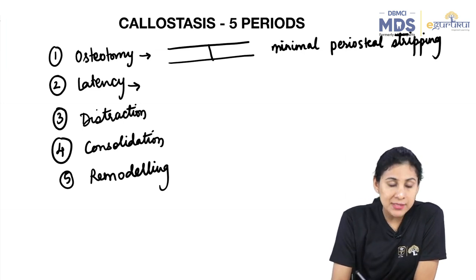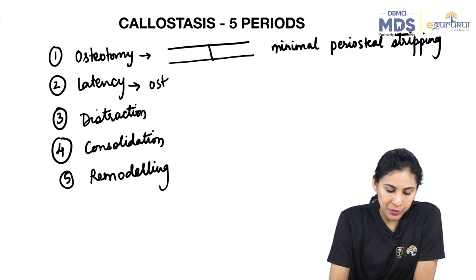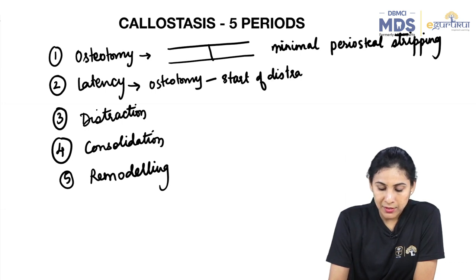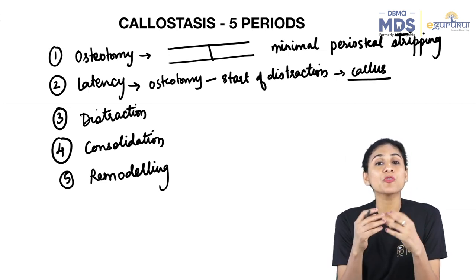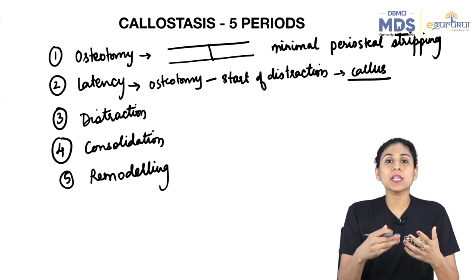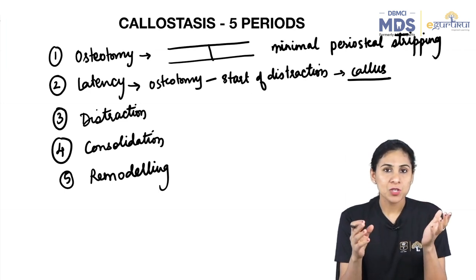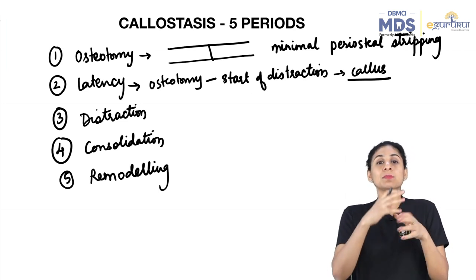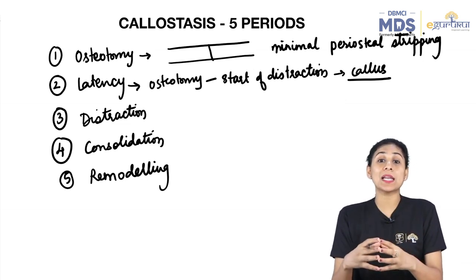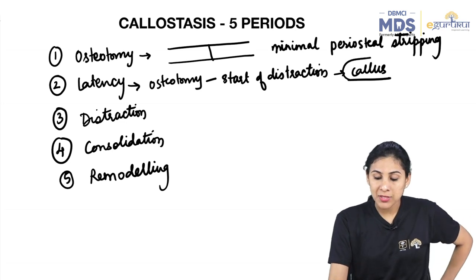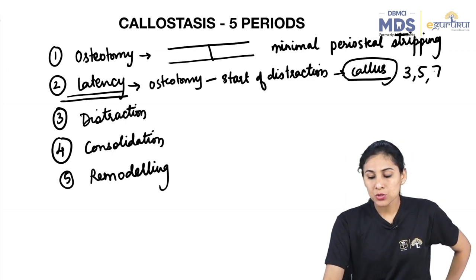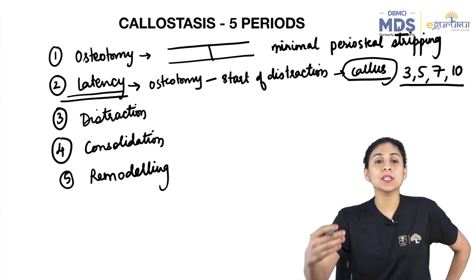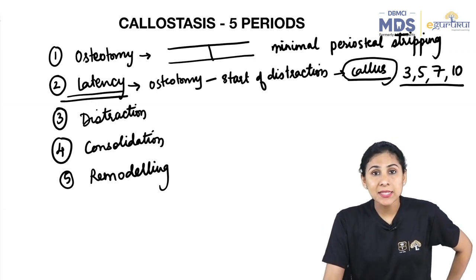The second stage is latency — the time from osteotomy to the start of distraction. This is the period in which callus formation is allowed. If you start distracting immediately, you have not given the bone enough time for callus formation. The time of latency depends on many factors: age of the patient, blood supply of the area, and health of surrounding tissue.